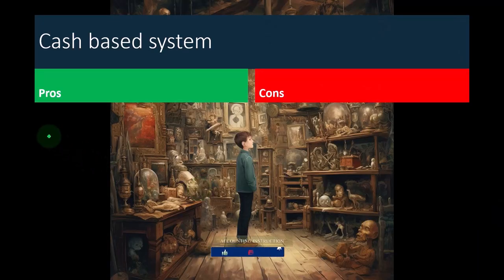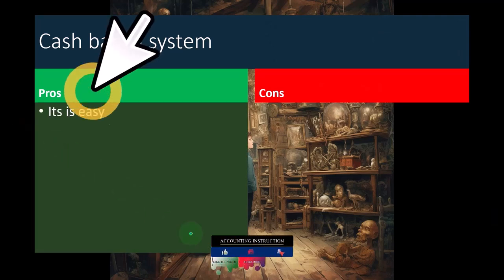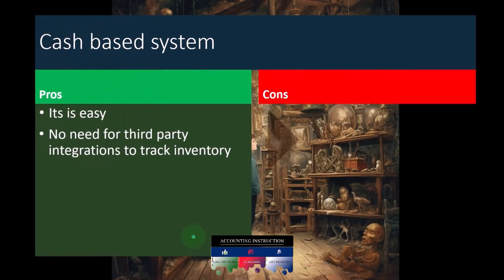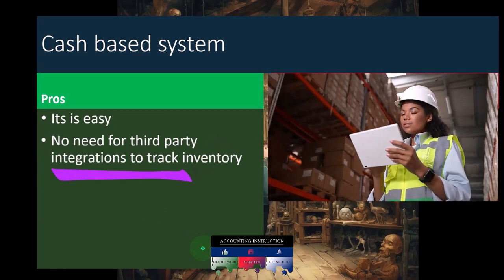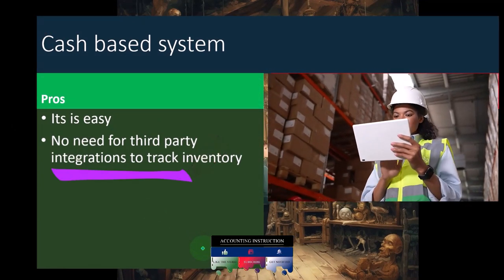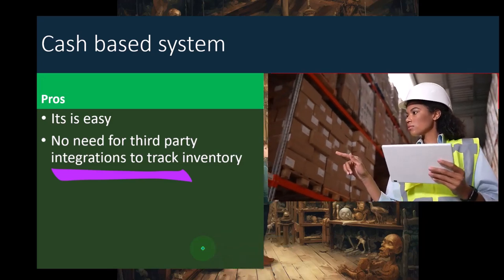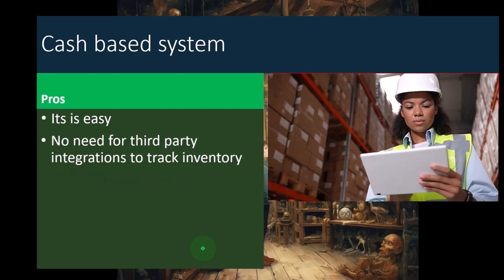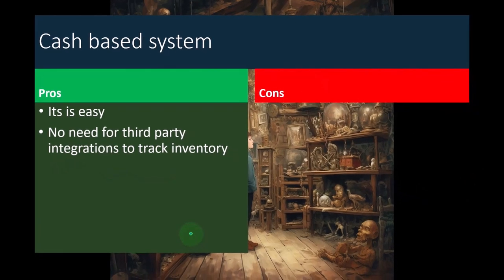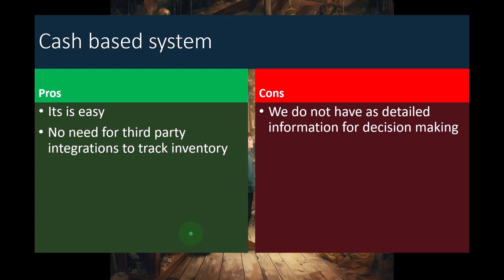Let's take a look at the pros and cons in a bit more detail of the simplest method. The pros: it's easy. There's no need for third-party integrations to track inventory. The more integrations we have, the more complex our system, so it's nice to keep it easy. The only thing we would be using here is bank feeds, which most people are feeling pretty comfortable with at this point.